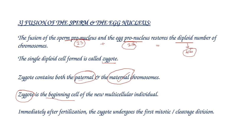Immediately after fertilization and formation of the zygote, the zygote undergoes the first mitotic division, also called cleavage division. Once the zygote is formed, all subsequent divisions are mitotic — the zygote always undergoes mitotic division.